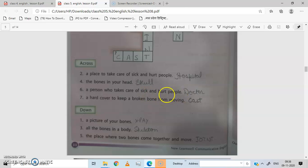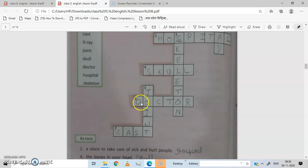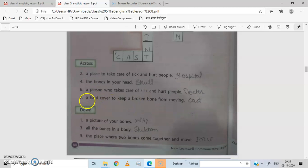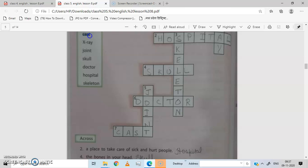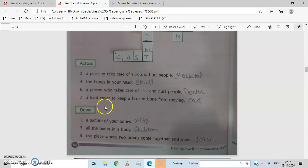Number 6, a person who takes care of sick and hurt people. Number 7, a hard cover to keep a broken bone from moving. A hard cover, that is number 7, cast. Okay, here is a cast, plaster cast, which is for a broken bone which is not able to move.